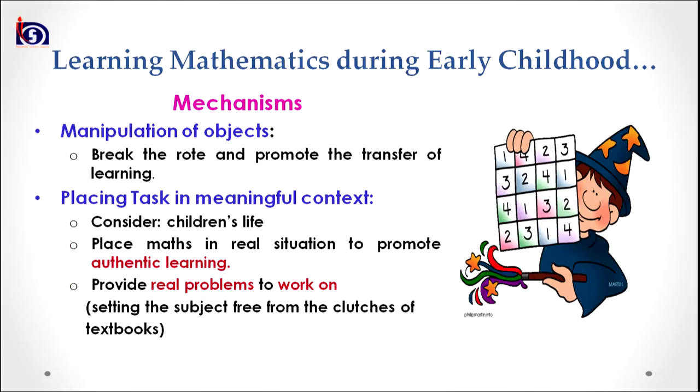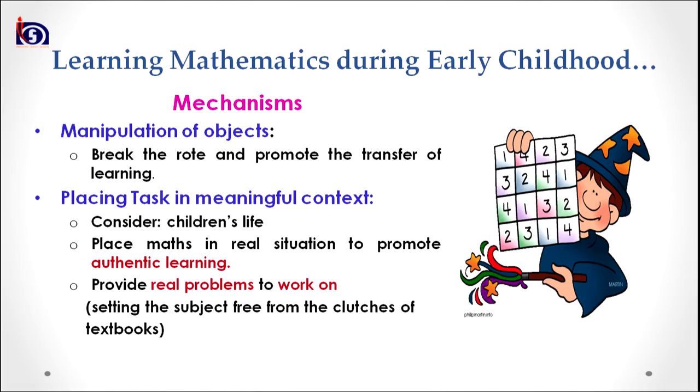What are the different mechanisms available to learn mathematics in early childhood? We can make children learn mathematics through the manipulation of objects. We have different kinds of children in our classes, and different learners are comfortable with different kinds of objects and resources. The manipulation of objects and making children active would break rote learning and promote transfer of learning to real-life situations — that is, whatever he or she learns in class, they can apply or innovate with it outside the class.